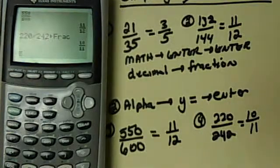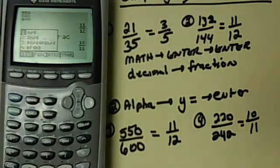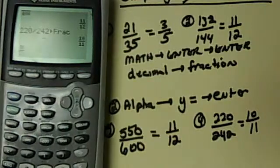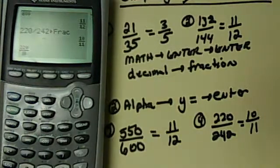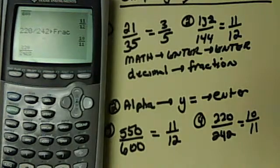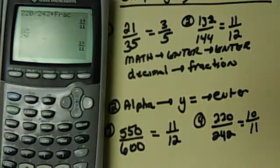Or, I can use my submenu by hitting alpha, y equals, and enter. And then just fill it in, 220 down to 242. And it's going to give me back 10 over 11.